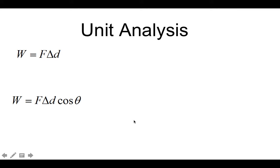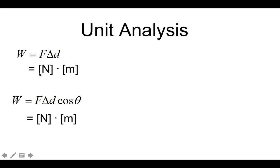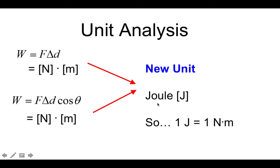For unit analysis, let's look at our equation. Force has units of newtons and distance has units of meters, so work is a newton-meter. We rename this as a new unit called a joule — a joule is a newton-meter. This is our second new unit in physics; the first was the newton.